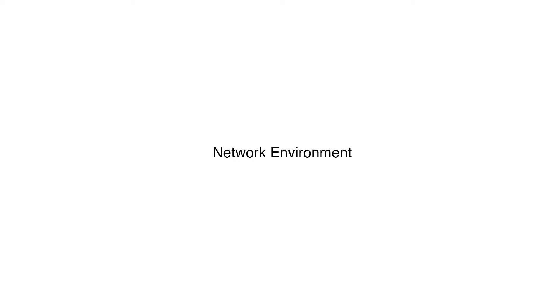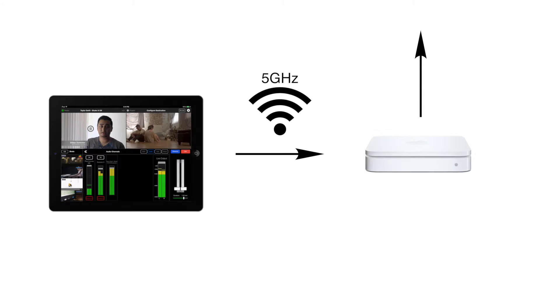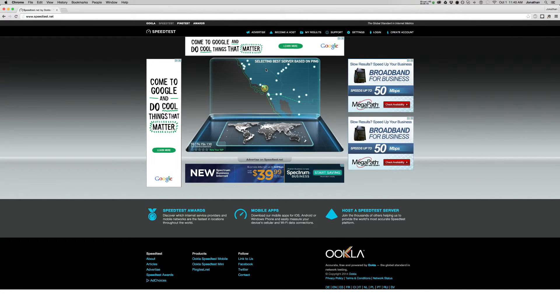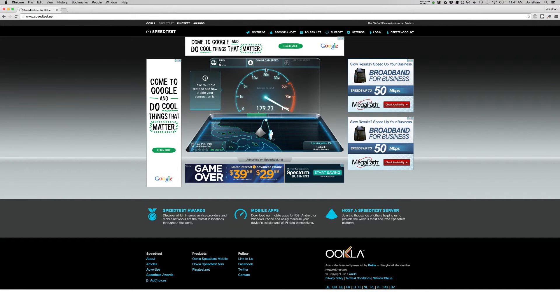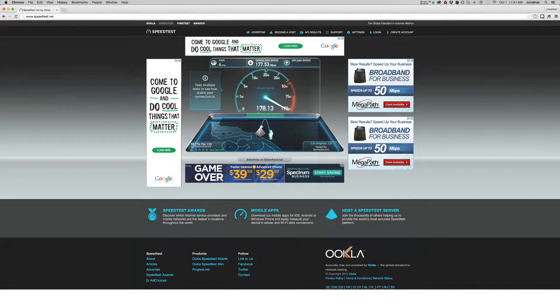In order to get the best quality stream possible, you need a strong, preferably 5GHz Wi-Fi environment with at least 150% of the bandwidth needed for your stream. For example, 1080p video requires about 3.5Mbps of upload speed, so for best results, make sure you have at least a stable 5-6Mbps upload speed. You can run a network speed test to check your connection in both directions. This is in order to protect your stream reliability from sudden dips in connection or other devices using upload bandwidth.